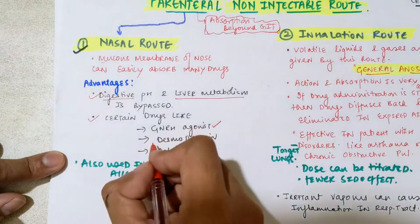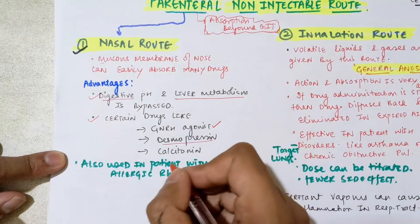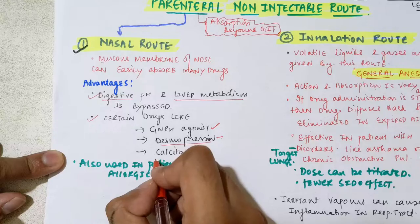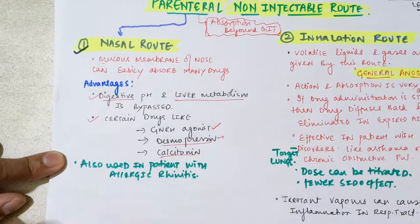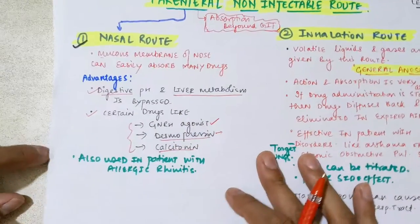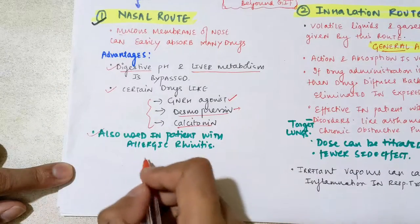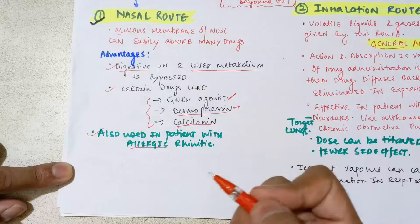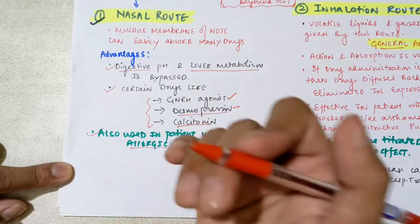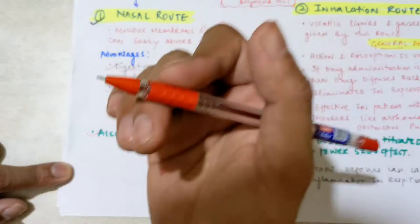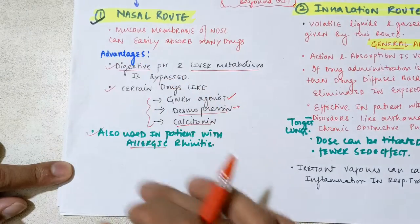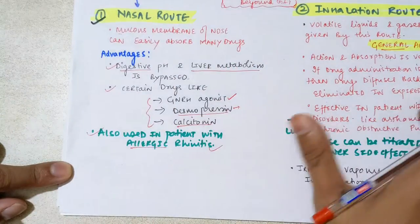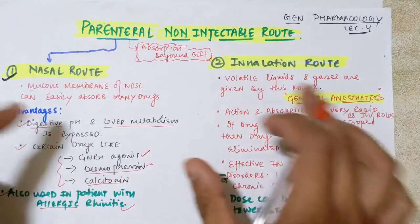Other drugs given nasally include desmopressin — a synthetic analog of vasopressin — and calcitonin. So these are the main drugs given through the nasal route. An additional important point is that the nasal route is also used in patients with allergic rhinitis — patients who have inflammation or allergy inside the nose. In those patients we can use the nasal route for drug administration.